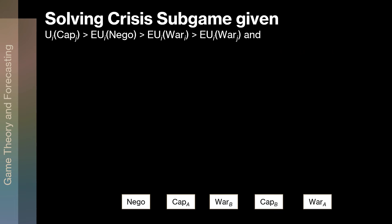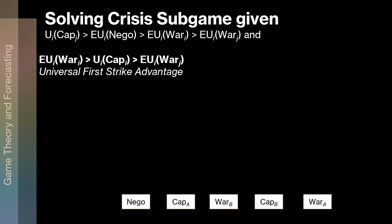Now moving on to our second situation. Let's move the utility for capitulation so that each player would prefer to fight if they can strike first, but if the other guy strikes first, they'd rather just give up. So let's assume a kind of universal first-strike advantage: you'd be okay fighting over giving up if you could start it, but if the other guy starts it — not so much. Let's see what happens.